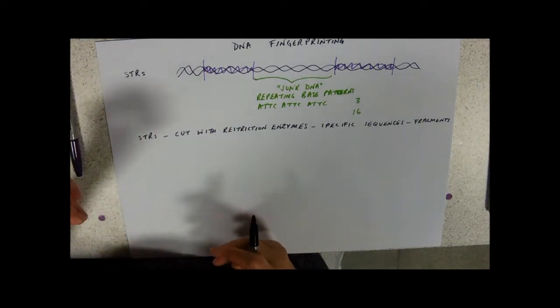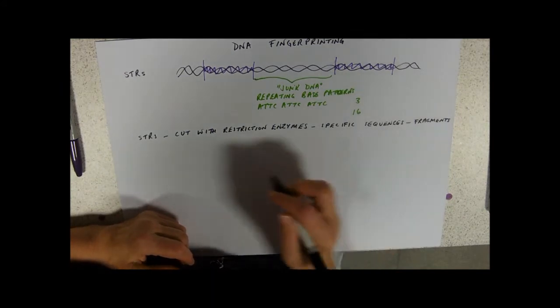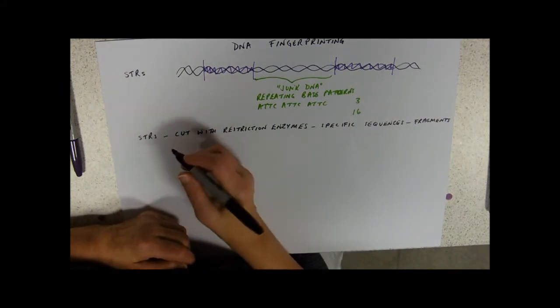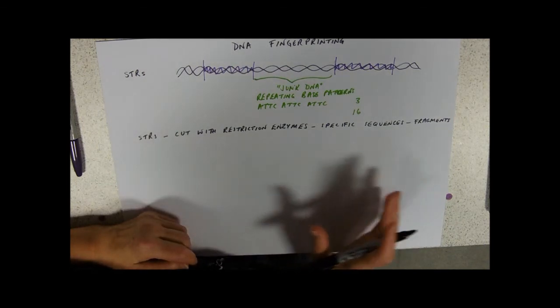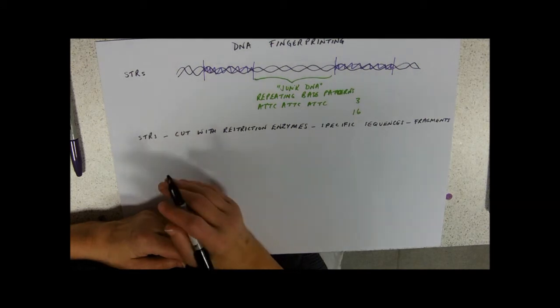Now I imagine that in real life they use EcoR1 and then they use Hind3 and then they use MstI, so they're using different ones so that one person's genetic fingerprint would have a number of different fragments. And probably they're looking at different bits of junk DNA as well because you won't want to make a mistake with this, especially not in America where they've got the death penalty.